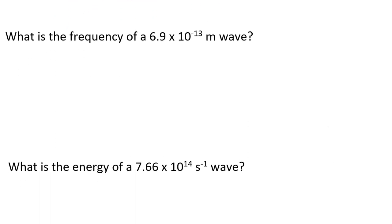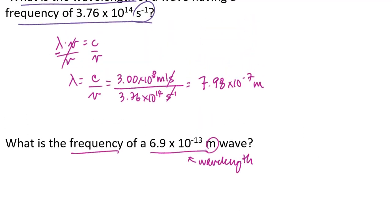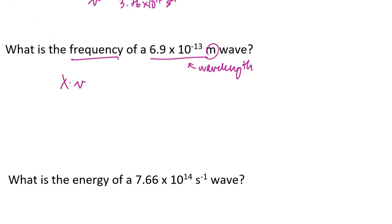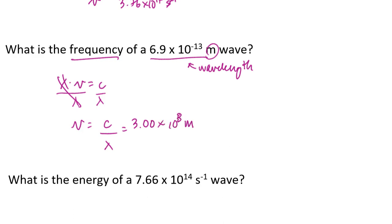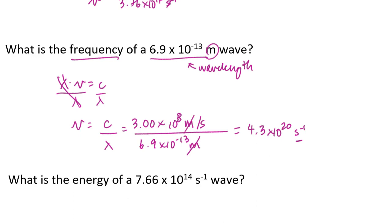Next, I'm asked to calculate the frequency of a wave with a wavelength of 6.9 times 10 to the negative 13th meters. Using the same equation — wavelength times frequency equals the speed of light — I solve for frequency by dividing both sides by wavelength. Frequency equals 3 times 10 to the 8th meters per second divided by 6.9 times 10 to the negative 13th meters. The meters drop out, and I get 4.3 times 10 to the 20th cycles per second.